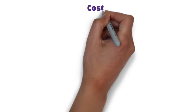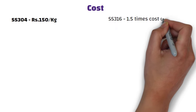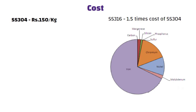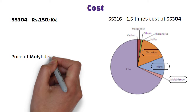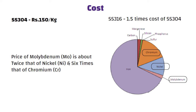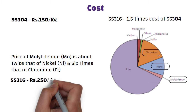The price of SS304 in India is approximately Rs. 150 per kg, whereas the cost of SS316 is about 1.5 times the cost of SS304. The price of stainless steel depends on the price of alloying elements such as nickel, chromium and molybdenum. The price of molybdenum is about twice that of nickel and 6 times that of chromium. The price of SS316 in India is approximately Rs. 250 per kg.